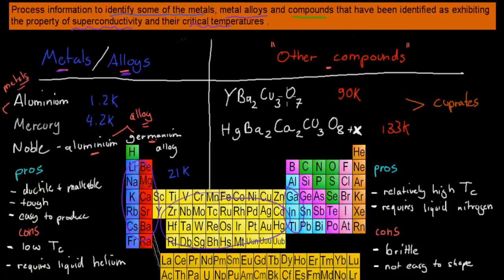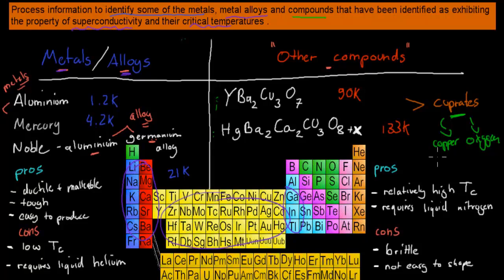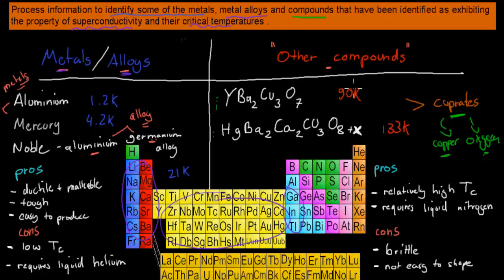On the other hand we have other compounds called cuprates. Cuprates contain both copper and oxygen in their structure. I haven't found simple names for these — just their chemical formulas — so if anyone knows the names, drop them in the comments. These two cuprates both have copper and oxygen in their structures. Their critical temperatures are quite different: 98 Kelvin for the first and 133 Kelvin for the second. They're called compounds because they're made up of more than one type of element.